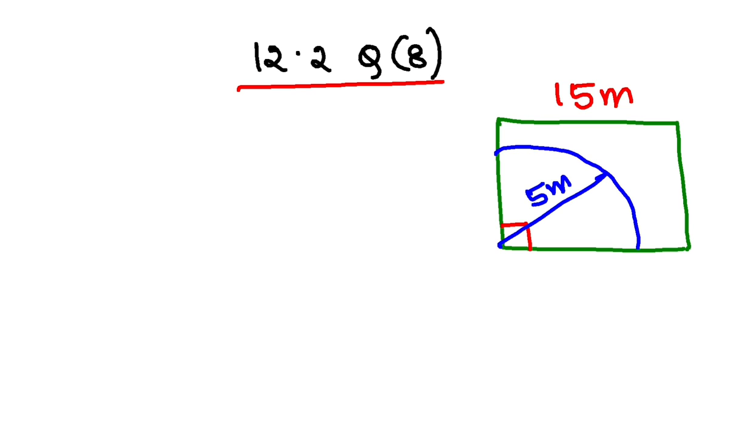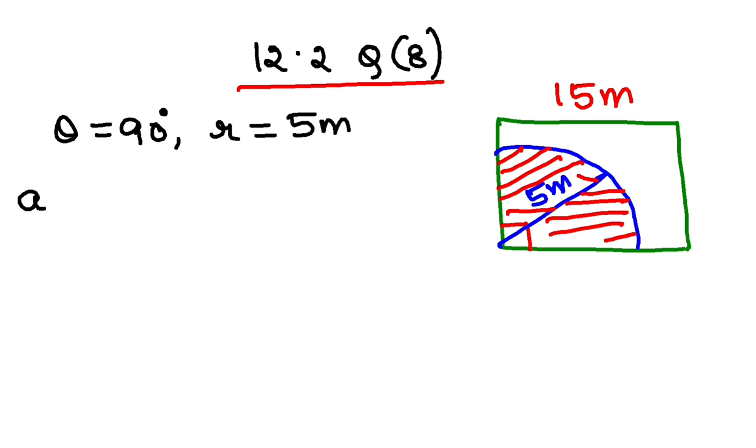You have to find the area of the field that is available to the horse for grazing. Geometrically, this is a sector. So theta is 90 degrees, and the radius or length of the rope is 5 meters. We can apply the area of sector formula.